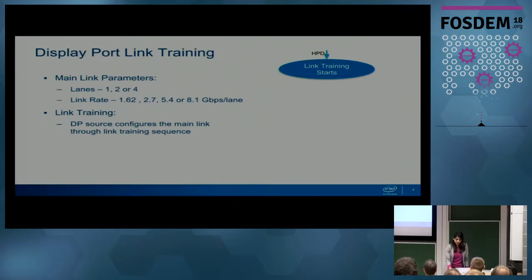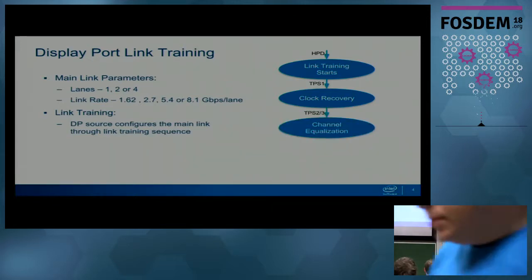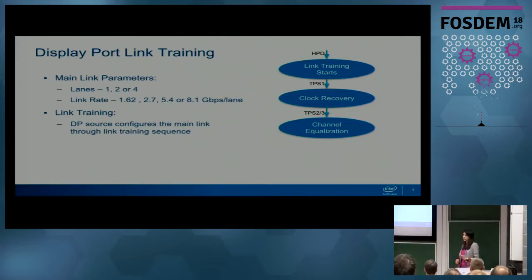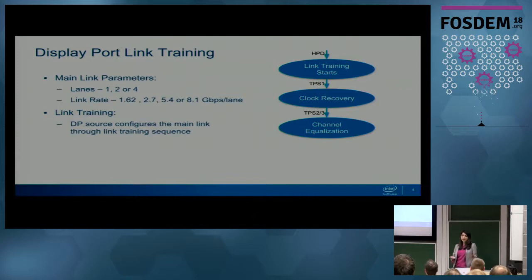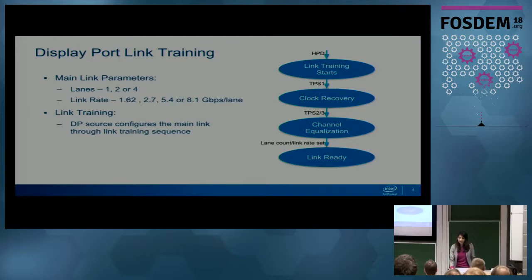Once it has negotiated these parameters between the source and the sync device, it's ready to encode the data and start sending it on the cable. This negotiation sequence is called DisplayPort link training. The source starts the link training - first it goes through the clock recovery sequence, sending known training data patterns to lock the clocking information on the DisplayPort receiver end. Then it sends another known training pattern with a known skew between lanes to find inter-lane alignment. After these two sequences succeed, the source and sync device lock a particular link rate and lane count, and the link is ready.